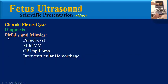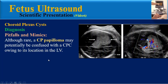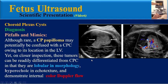Another pitfall and mimic is choroid plexus papilloma. Although rare, a choroid plexus papilloma may potentially be confused with a choroid plexus cyst owing to its location in the lateral ventricle. On closer inspection, these tumors can be differentiated from cysts in that they are lobular in morphology, hyperechoic in echotexture, and demonstrate internal color Doppler flow.